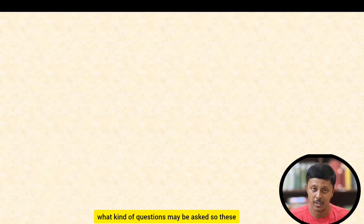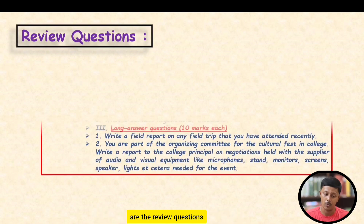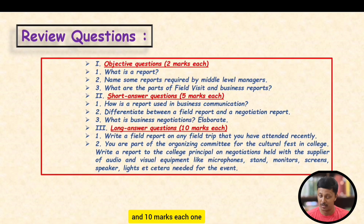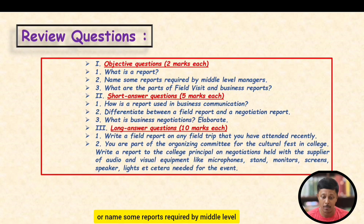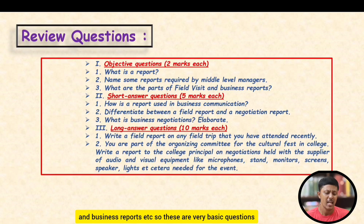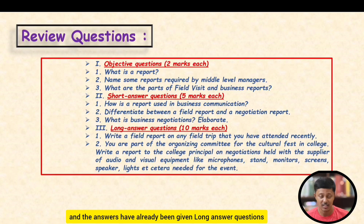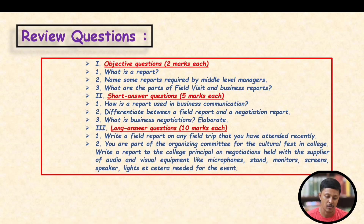Now, naturally you have in mind what kinds of questions may be asked. Here are the review questions: objective questions worth two marks, five marks, and ten marks each. For example: What is a report? Name some reports required by middle-level managers. What are the parts of field visit and business reports? These are very basic questions whose answers have already been covered in this video.